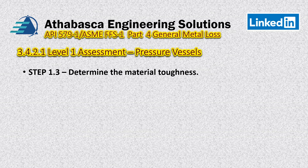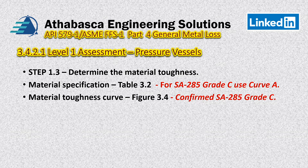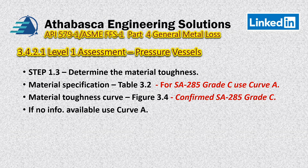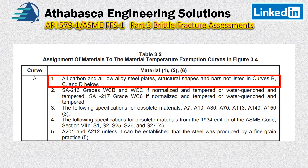Step 1.3 is where we start to look at the curve. In the material specification, we look up SA-285 Grade C and find that we should use Curve A, confirming we can use Figure 3.4. Table 3.2 lists material curves, and SA-285 Grade C falls into Part 1 — all carbon and low alloy steel plates, structural shapes and bars not listed in Curves B, C, or D. Going through those tables confirms we must use Curve A.